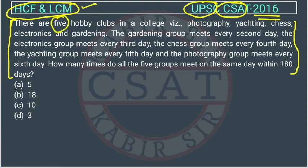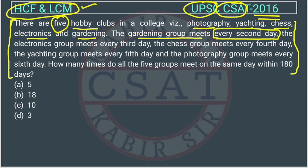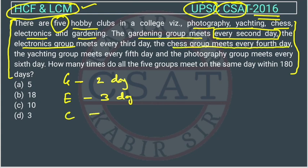There are five hobby clubs in a college: photography, yachting, chess, electronics, and gardening. The gardening group meets every second day, the electronics group meets every third day, the chess group meets every fourth day, the yachting group meets every fifth day, and the photography group meets every sixth day.